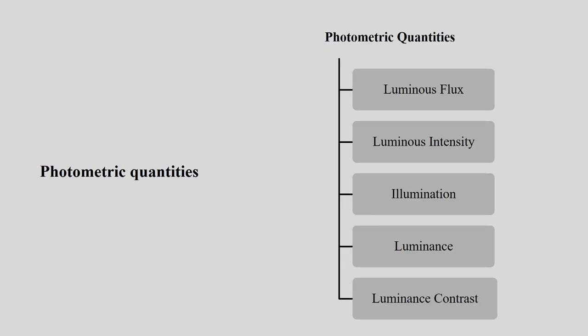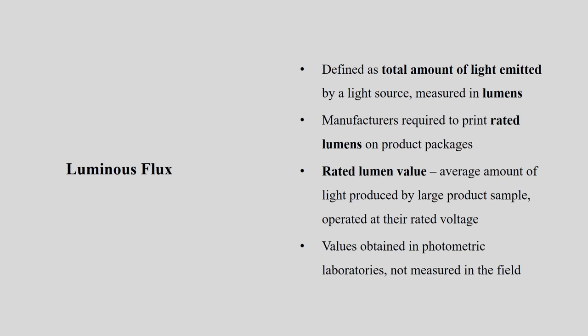When talking about photometric quantities, we normally try to measure five elements. The first is luminous flux, defined as the total amount of light emitted by a light source, measured in lumens. Manufacturers are required to print rated lumens on a product package. The rated lumen value is the average amount of light produced by a large product sample operated at their rated voltage, and values are obtained in photometric laboratories, not measured in the field.